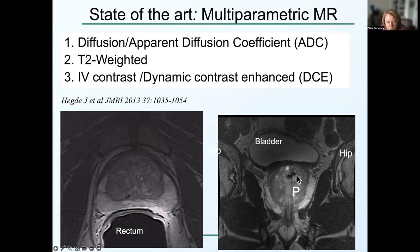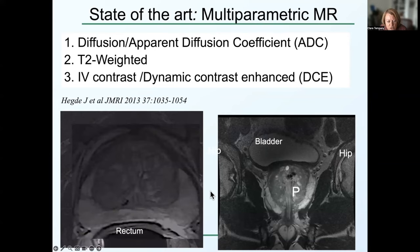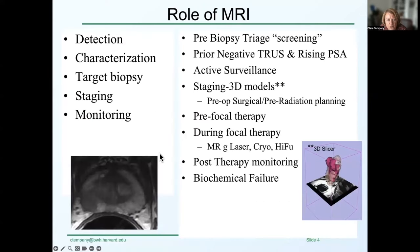The glandular tissue can calcify, so we can get areas of black, low signal, or it can break down and become cystic fluid, as seen here in these areas of high signal intensity. It's important to understand BPH's appearance so we can actually detect cancer.